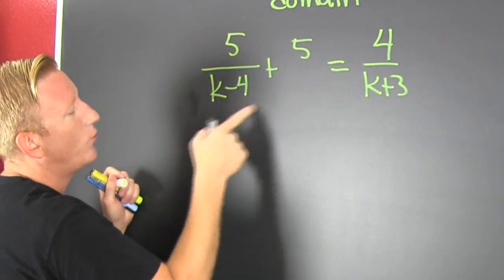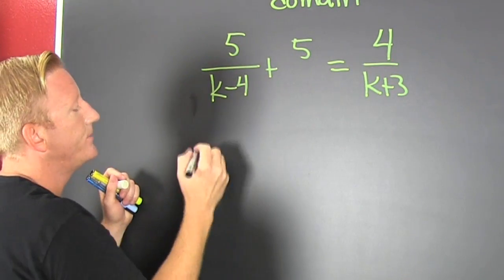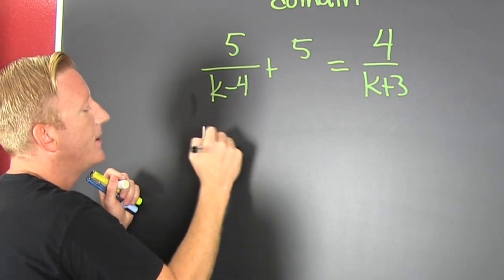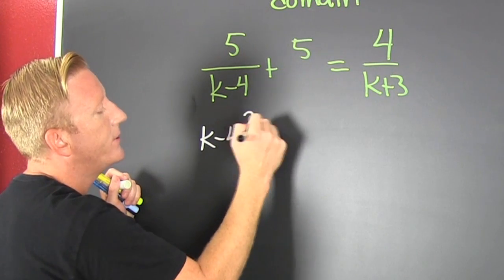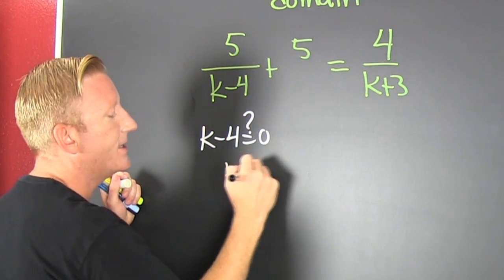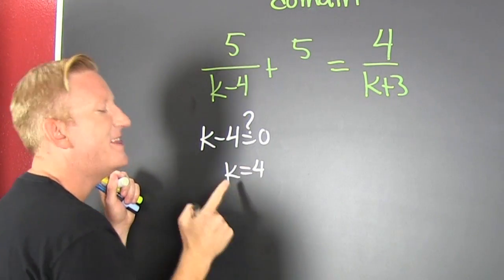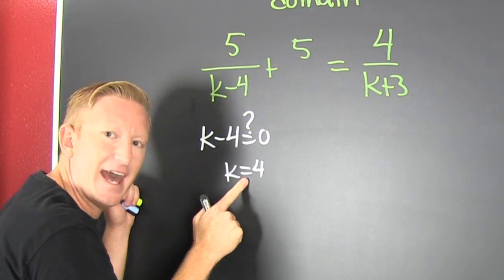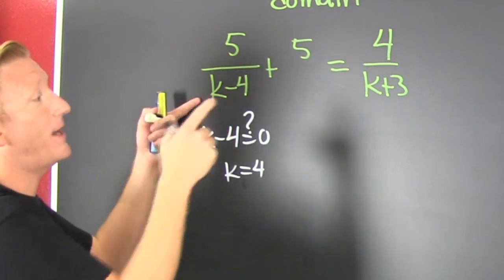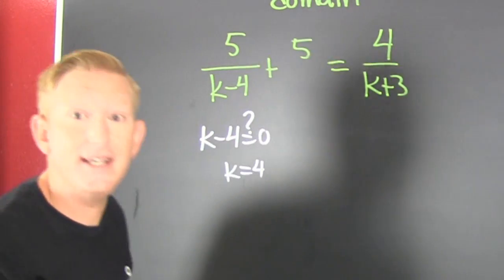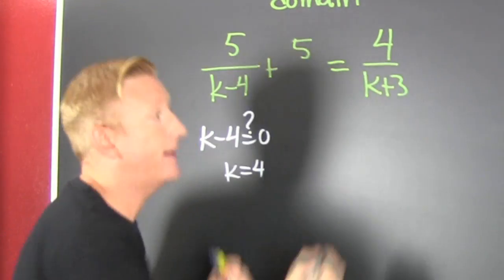So what makes this zero? k minus four — where are you? Zero. k is four. That's bad! When k is four, we divide by zero, and you can never do that!